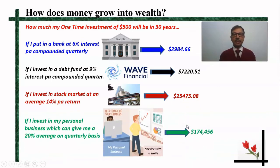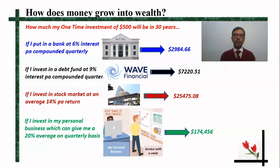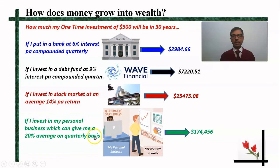Consider another case: instead of putting money in the bank, a debt fund, or the stock market, suppose he does some business of his own, where he can expect a 20% average return on a quarterly basis. He buys things for $500 and within 3 months sells them at a 20% profit — churning that money 4 times a year. If he keeps reinvesting the full amount each quarter over 30 years, that amount will become $174,000 plus. So you see how much difference there is in growth.